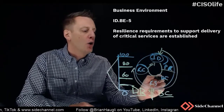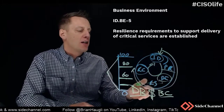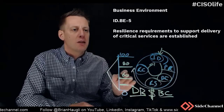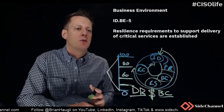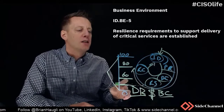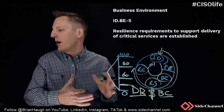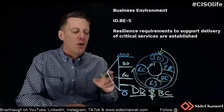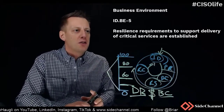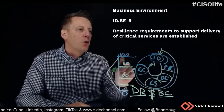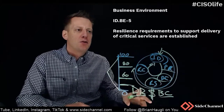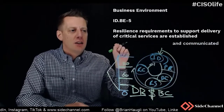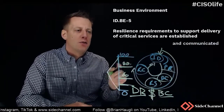What are you going to protect the most? What aspects of the organization need detection? Which ones do you need to respond to immediately? Which ones do you need to recover almost immediately to continue your operations? If everything is a priority, then nothing is a priority. What are the resilience requirements needed to support those critical services — are they established and communicated within the organization for this to be a truly effective control?